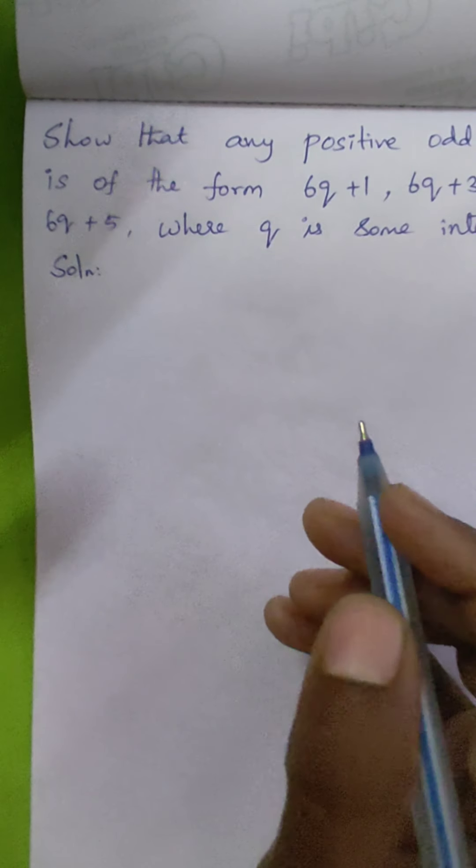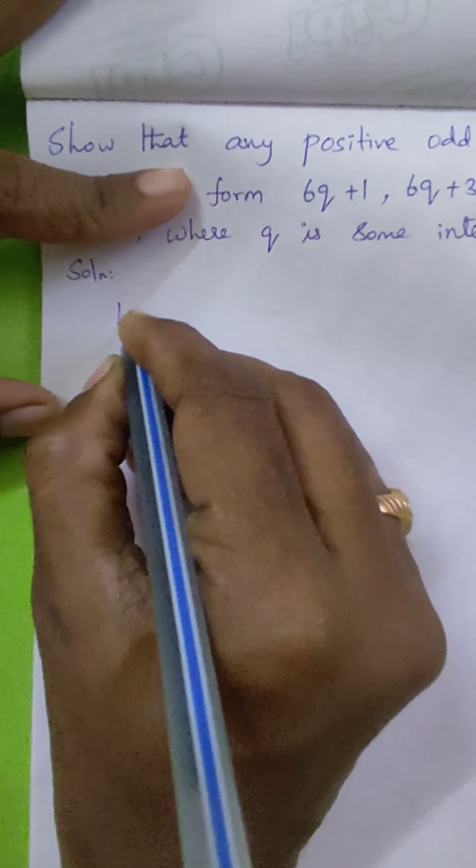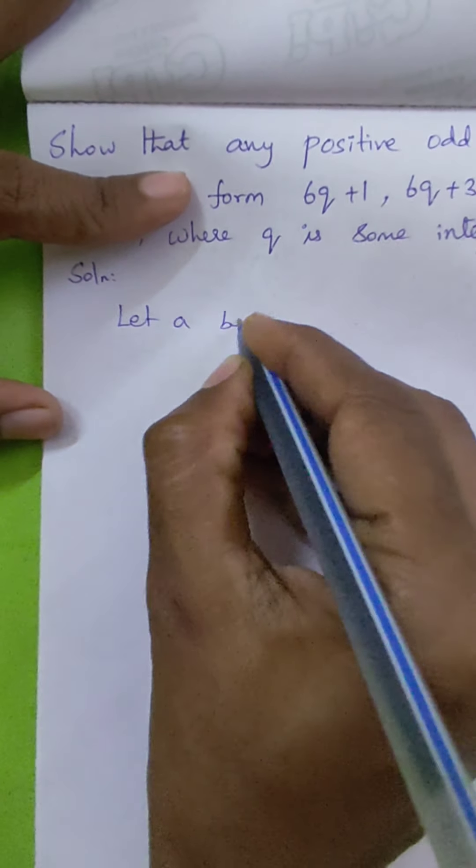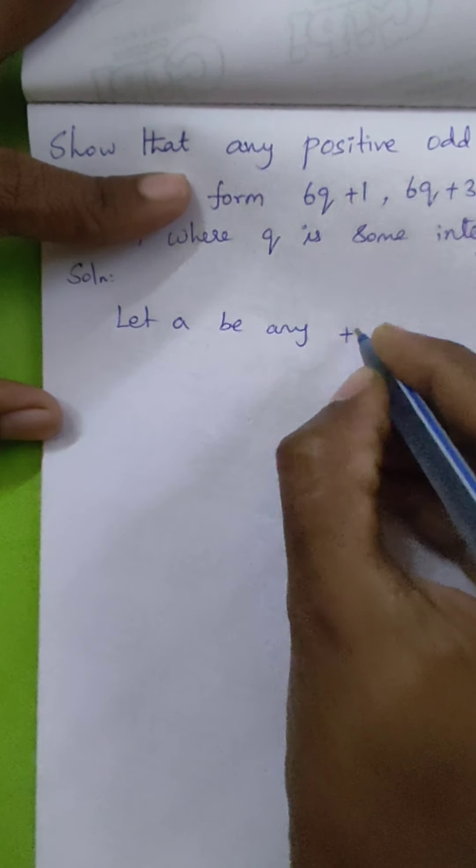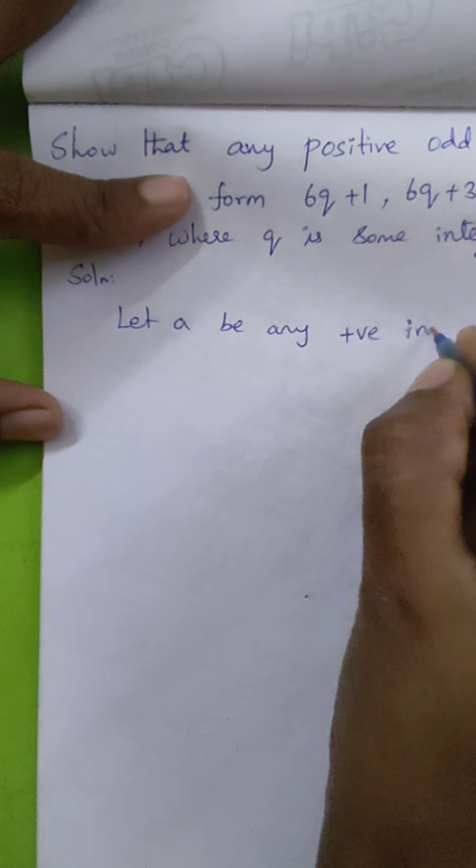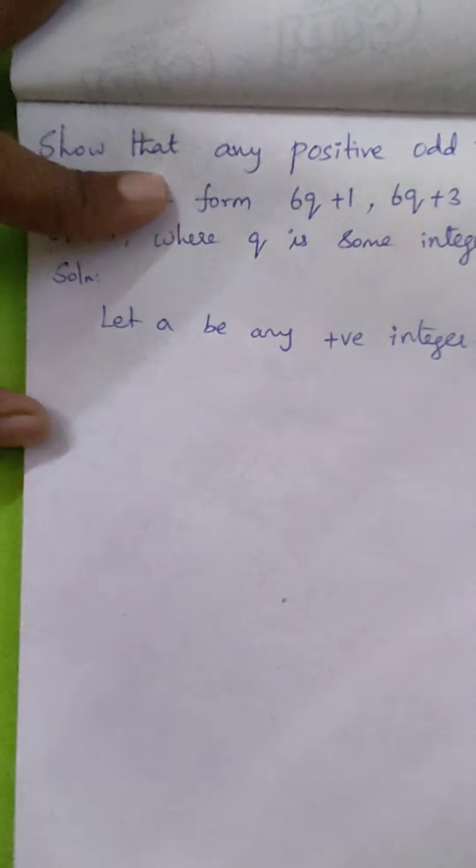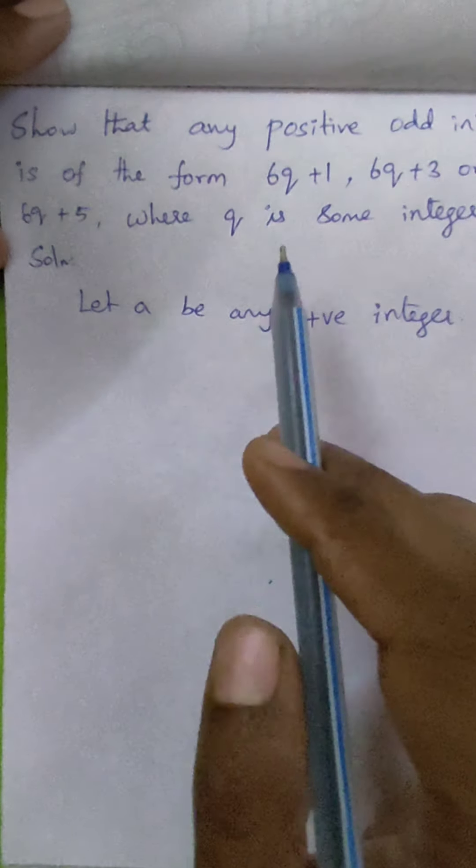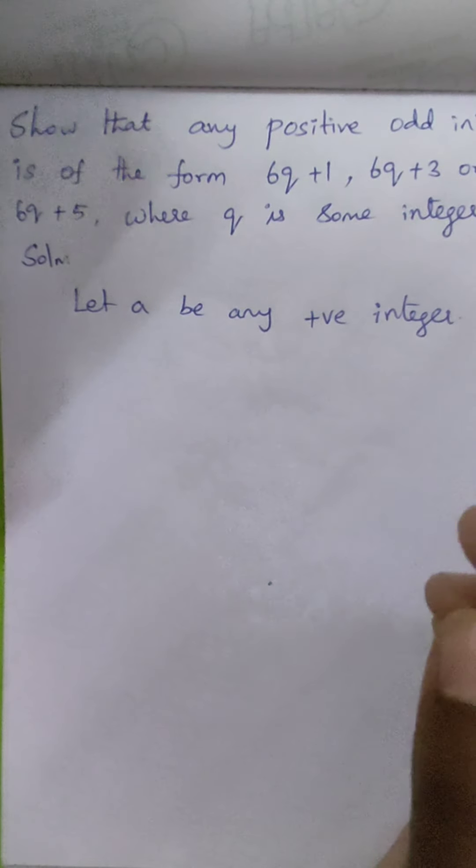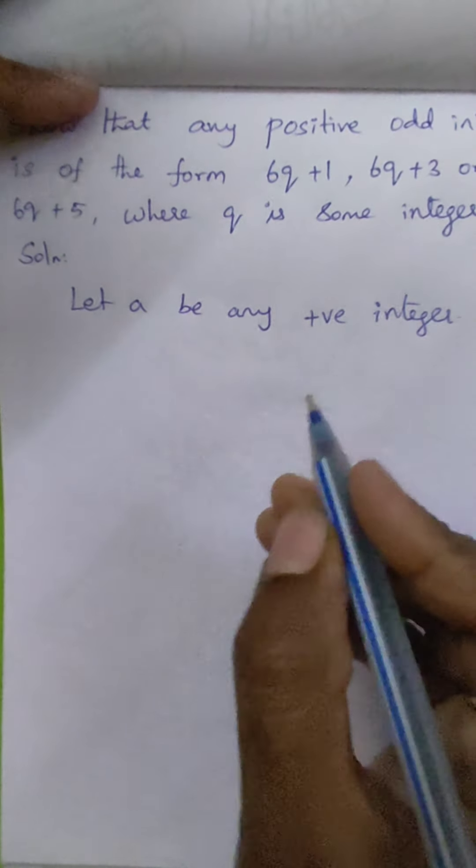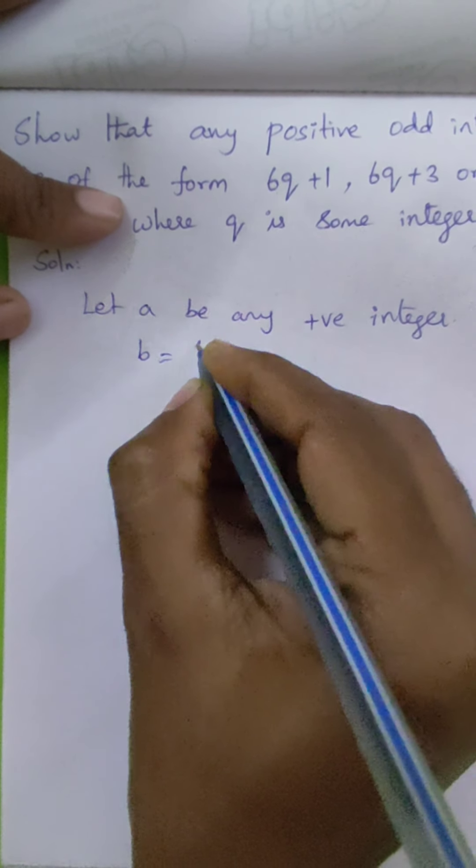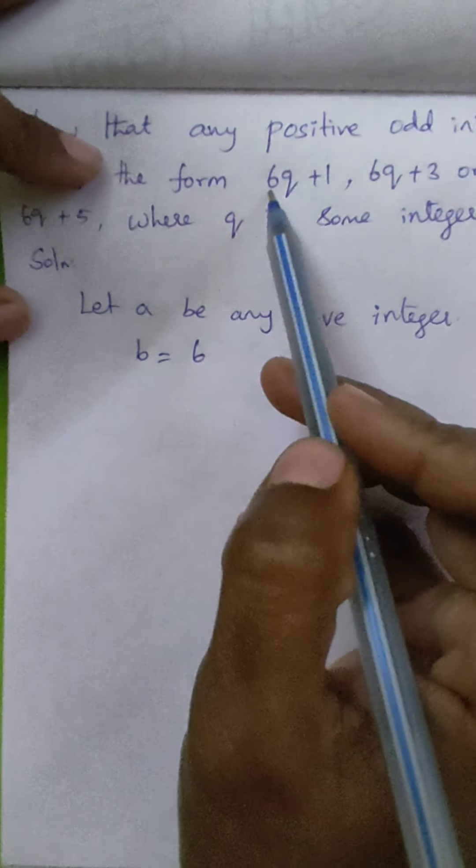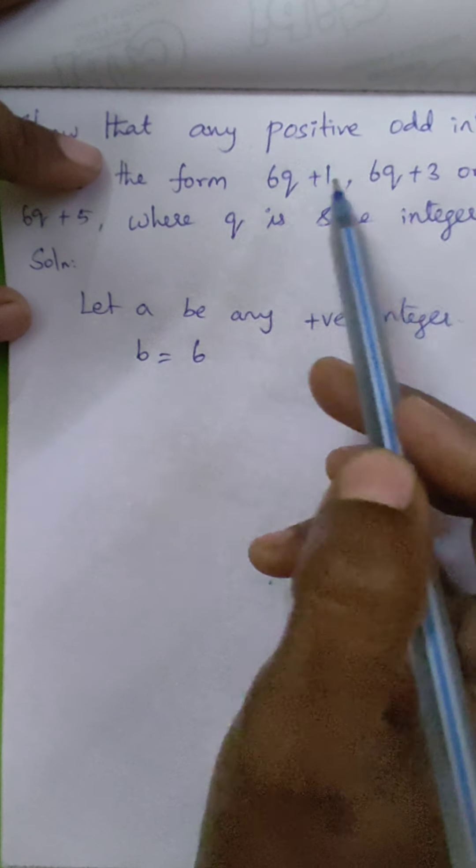First, let a be any positive integer. Now we are going to show this statement by using Euclid's algorithm. We have to choose another integer b. Here I am taking b as 6 because in all the cases we have 6q.